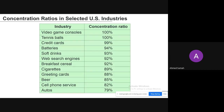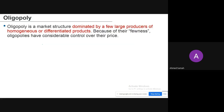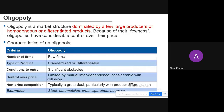Oligopoly is a market structure dominated by a few large producers of homogeneous or differentiated products. Because of their fewness, they exercise considerable control over price. Characteristics of oligopoly include: there are few firms — not many, not one, but few; their products can either be standardized or differentiated; and there are significant obstacles or barriers to entering the market, similar to monopolies.